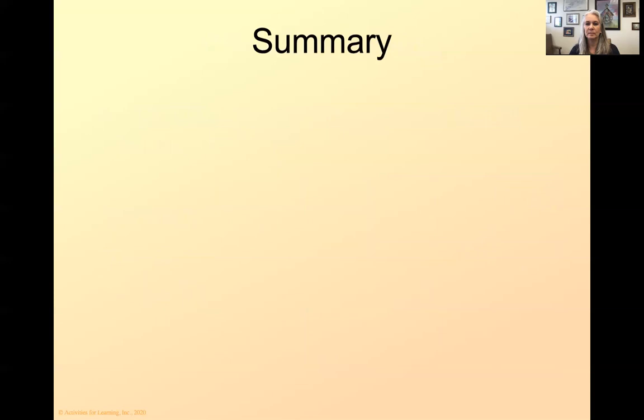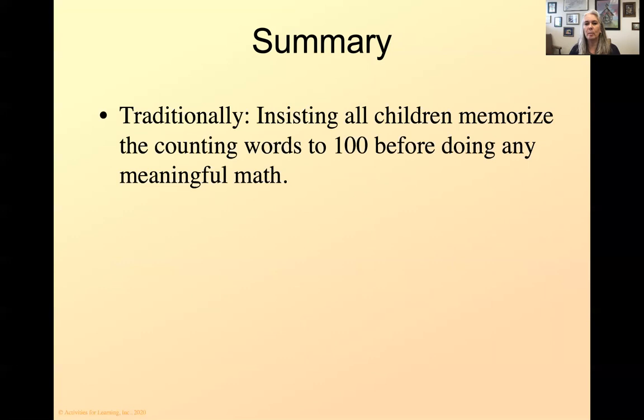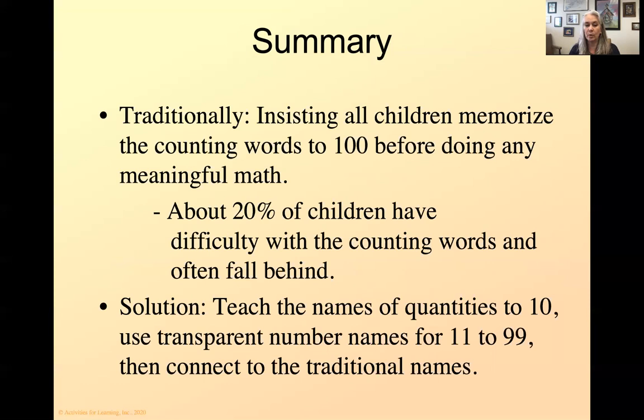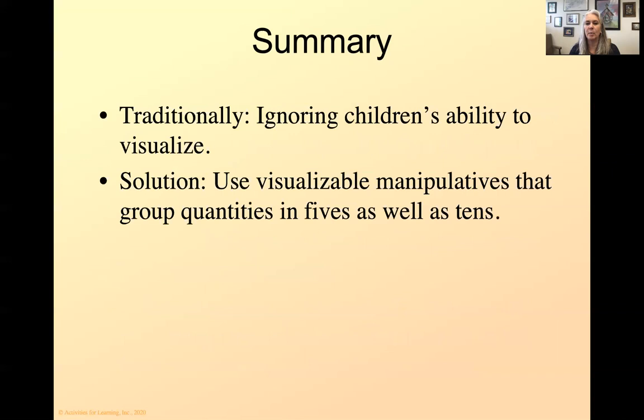As a summary, traditionally, we insist that children memorize the counting words to a hundred before doing any kind of math. But about 20% of our kids have difficulties with these, and then they fall behind, and they usually don't catch up. But our solution is to teach the names of the quantities to 10, so one through 10, and then use transparent number naming from 11 to 99, and then connect that math way of saying the numbers with the numbers that we use traditionally. Traditionally, we ignore the children's ability to visualize, but if we use visualizable manipulatives that group quantities in fives as well as tens, they can visualize it like the abacus.